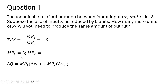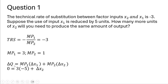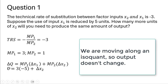Next, we recognize that the change in output, delta Q, will equal the marginal product of input 1 times the change in input 1, plus the marginal product of input 2 times the change in input 2. We're going to substitute what we know into this formula. Given that we're producing the same amount of output, the change in Q, the change in output, is 0.